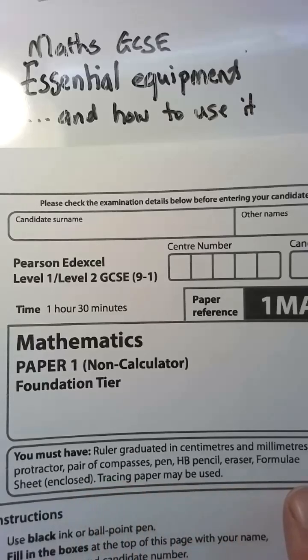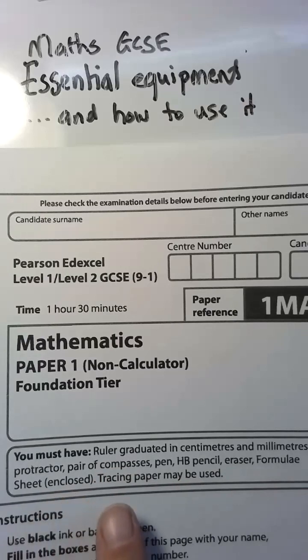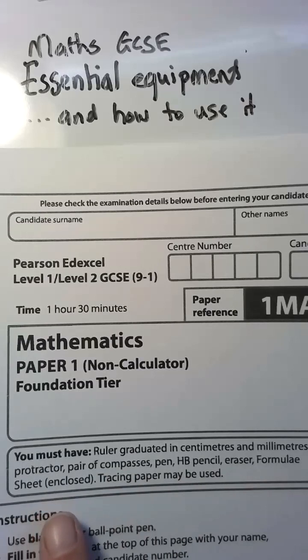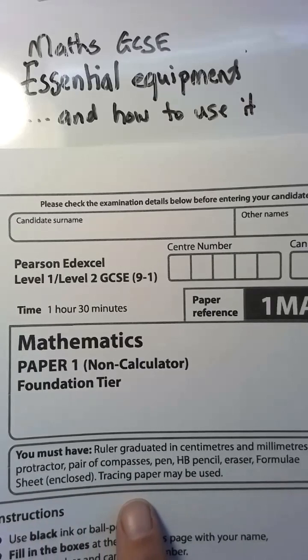Here's a list of the essential equipment that you need: a ruler, protractor, pair of compasses, pen, pencil, eraser. You can have a formula sheet that should be left on your table already. Tracing paper may be used as well. We're going to look at tracing paper right now.